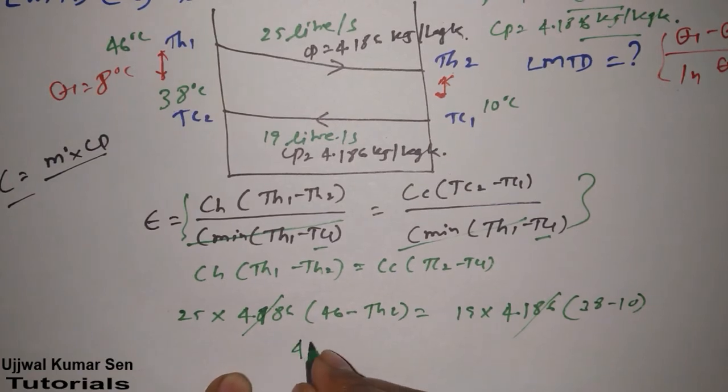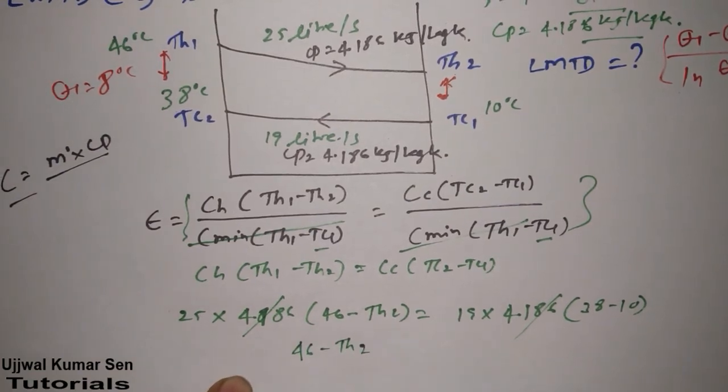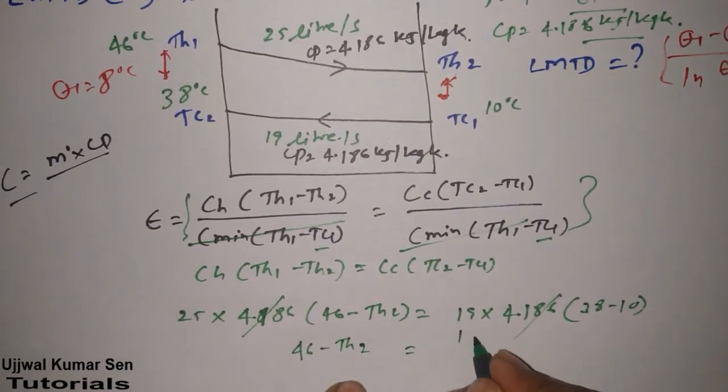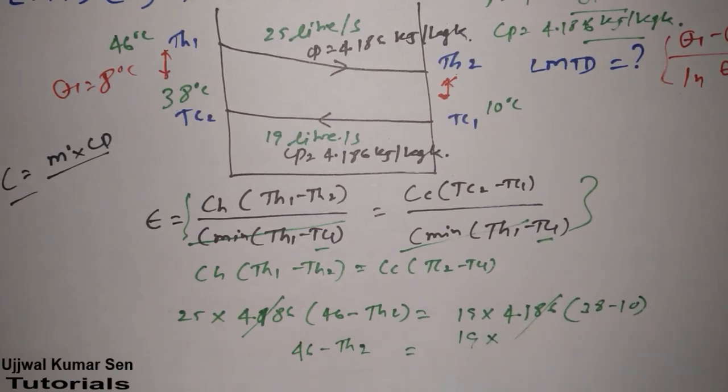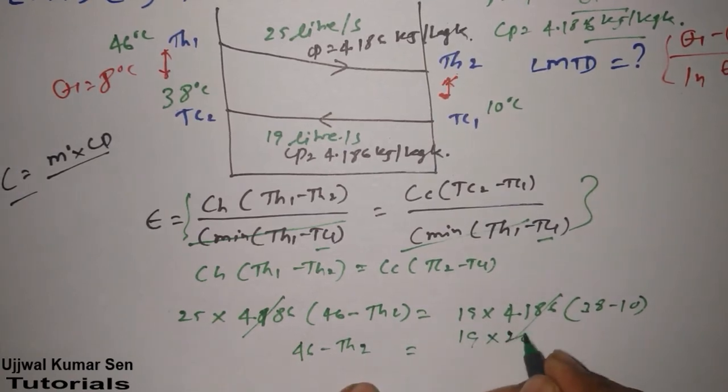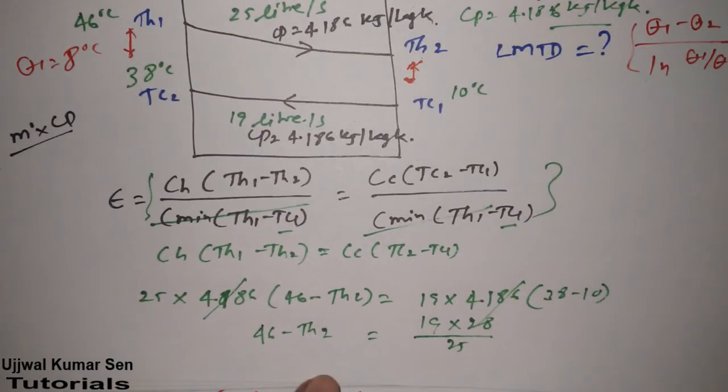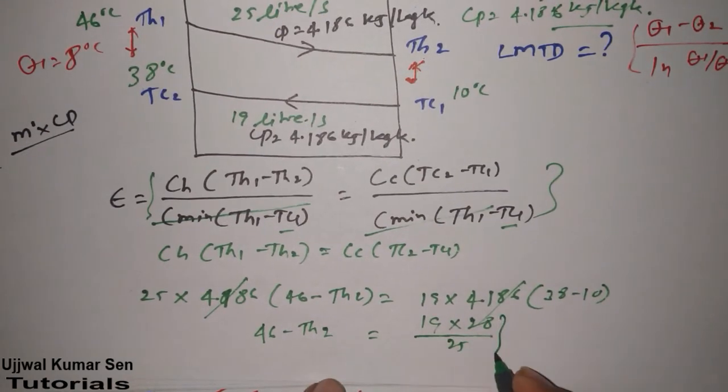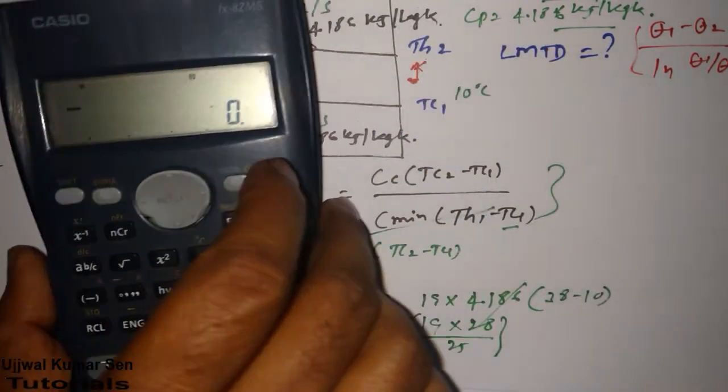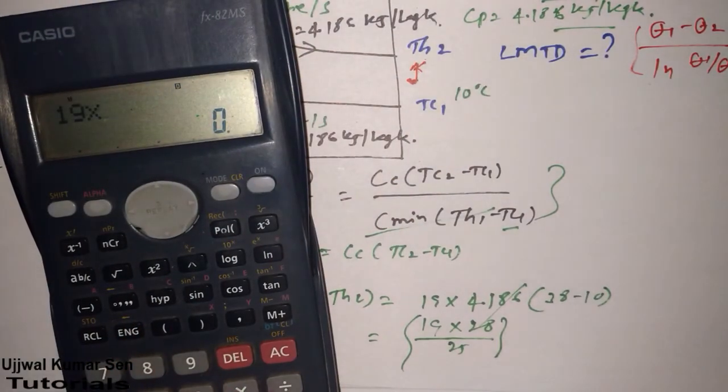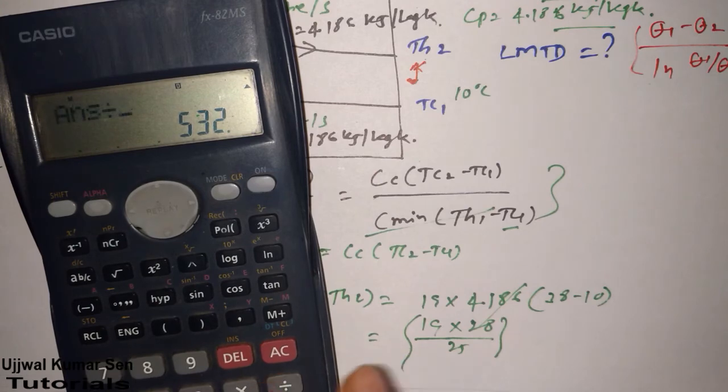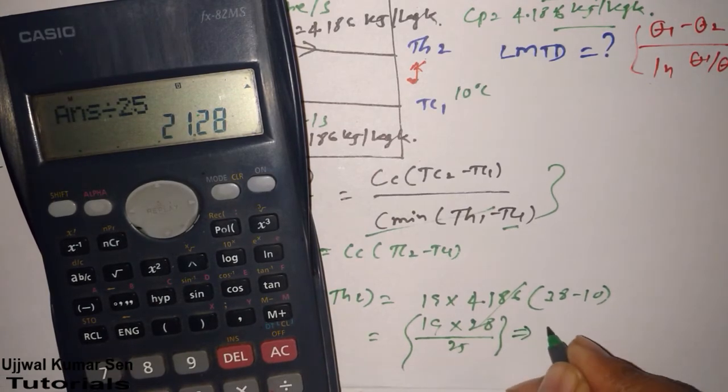Now we can say that 46 minus TH2 is equal to 19 multiple 28 division 25. Then we have to calculate this. For this I have to use calculator. 19 multiple 28 divided by 25 is equal to this. So this is becoming 21.28.